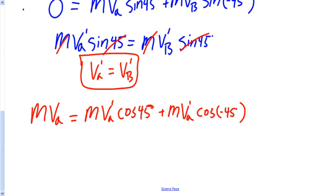Also, what you'll notice is that if you have the cosine of a negative angle, so cosine of negative 45 degrees, that's the same thing as cosine 45 degrees. So, going through the calculations, what we have here is the M's are going to cancel out.